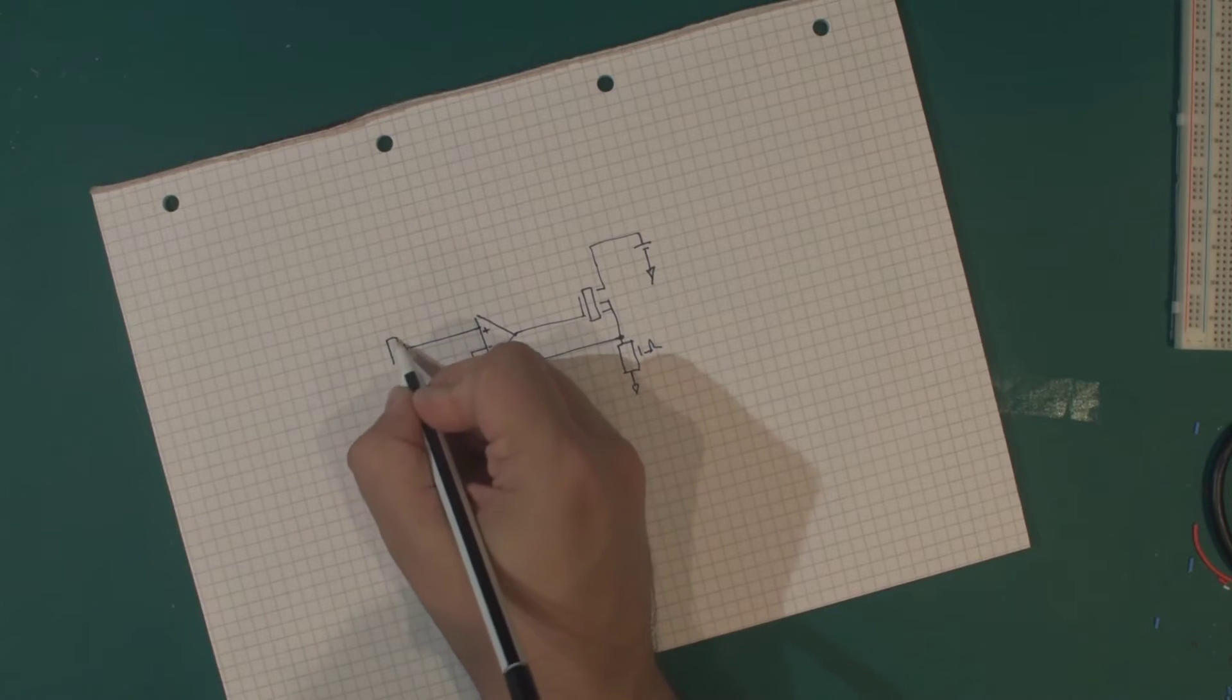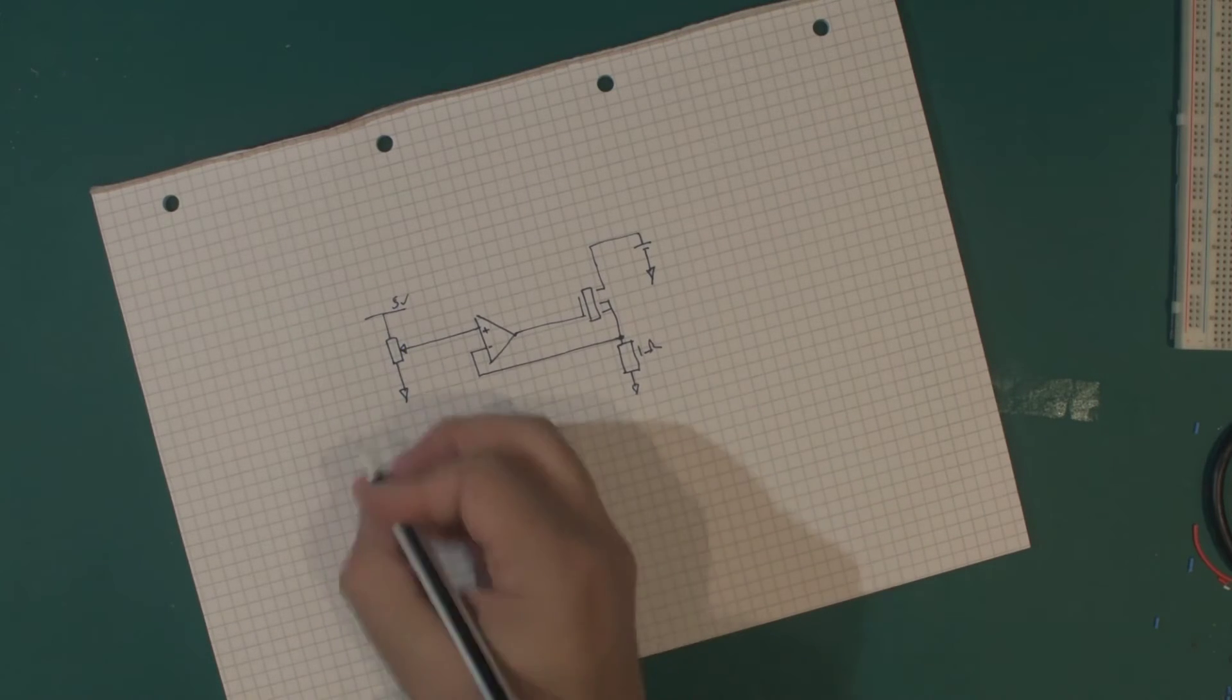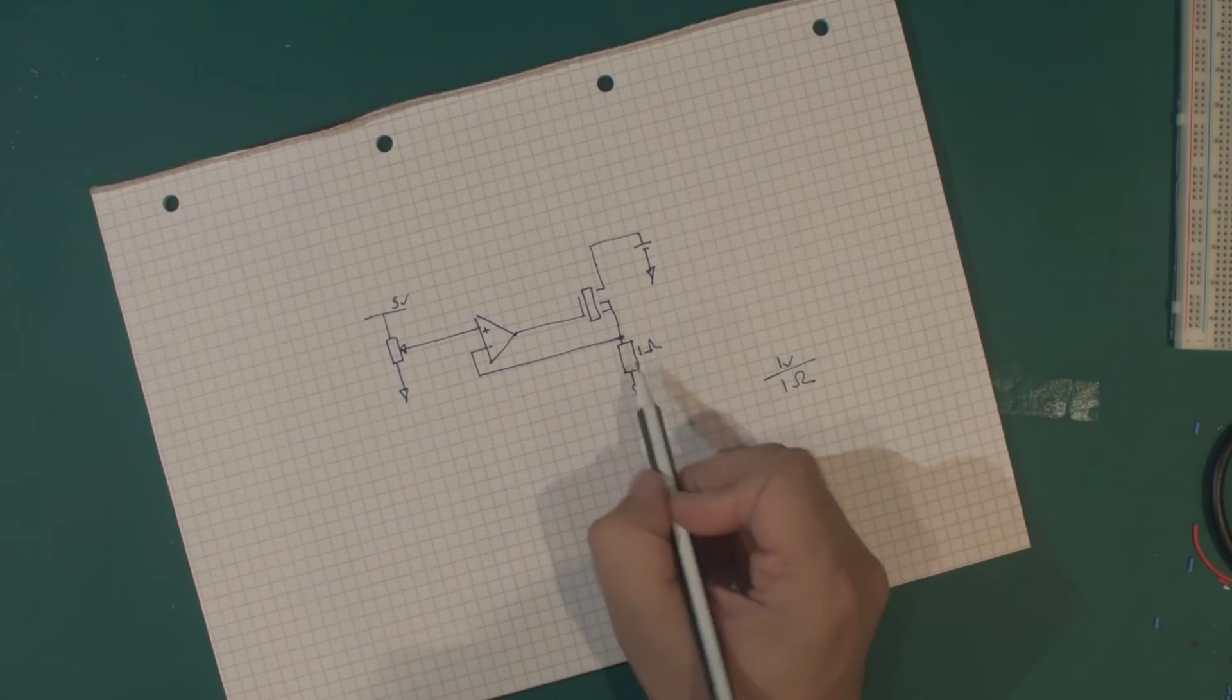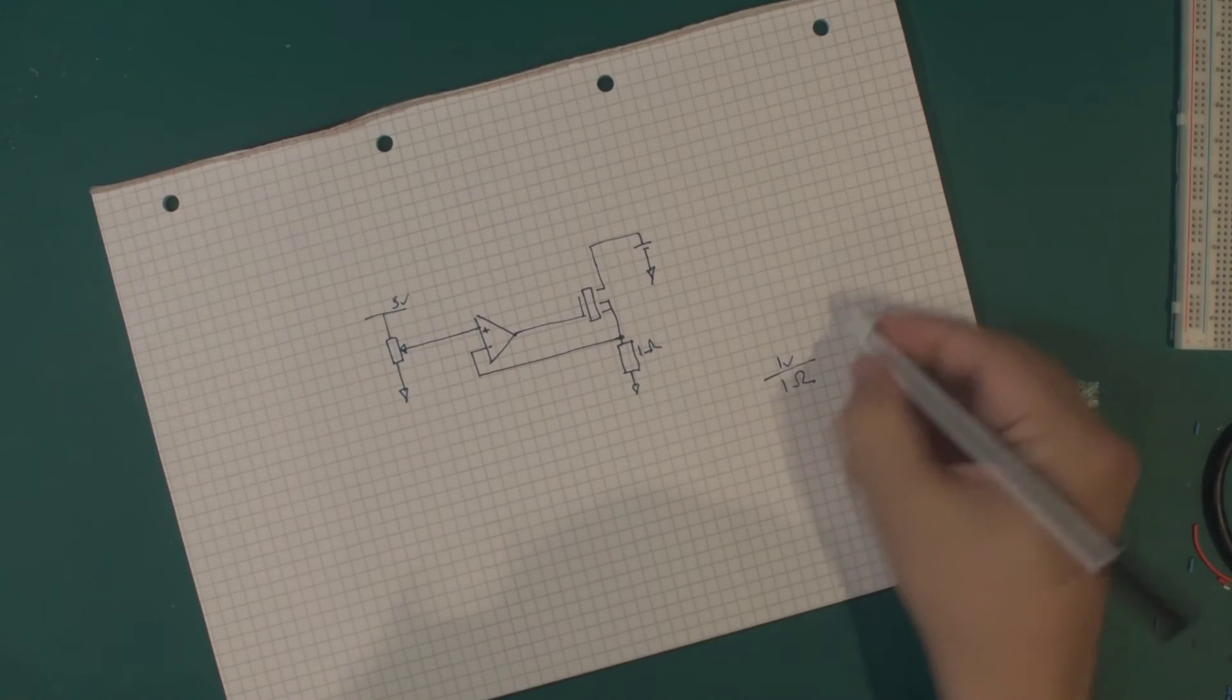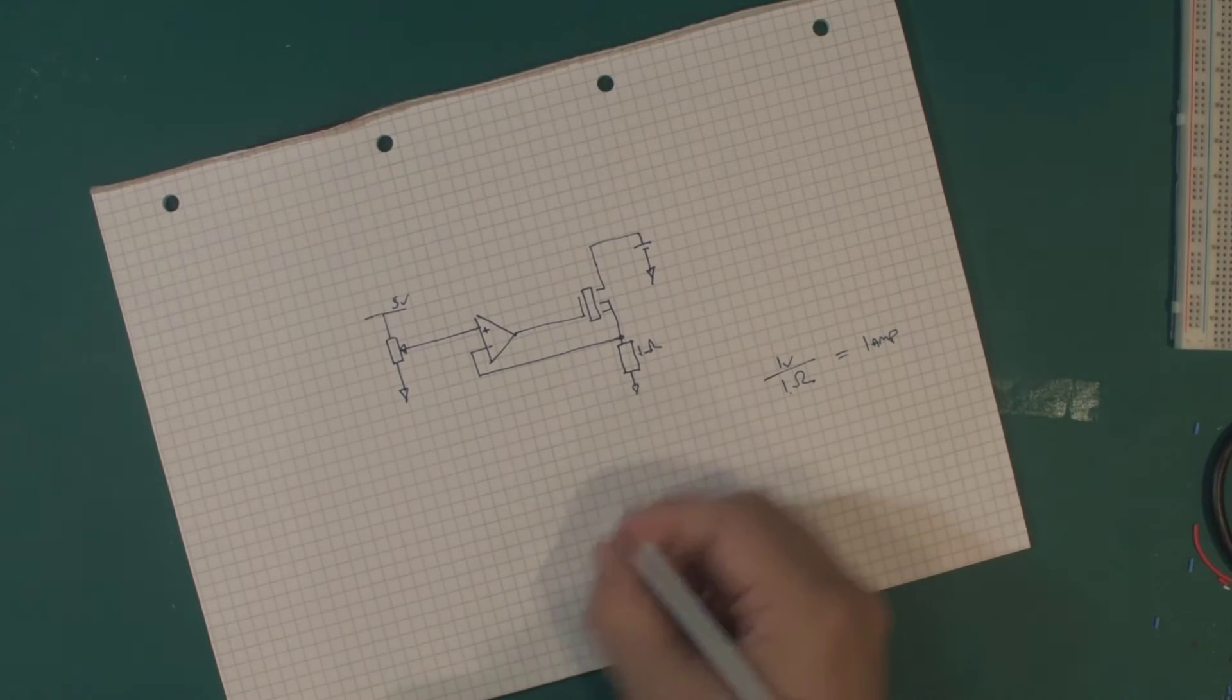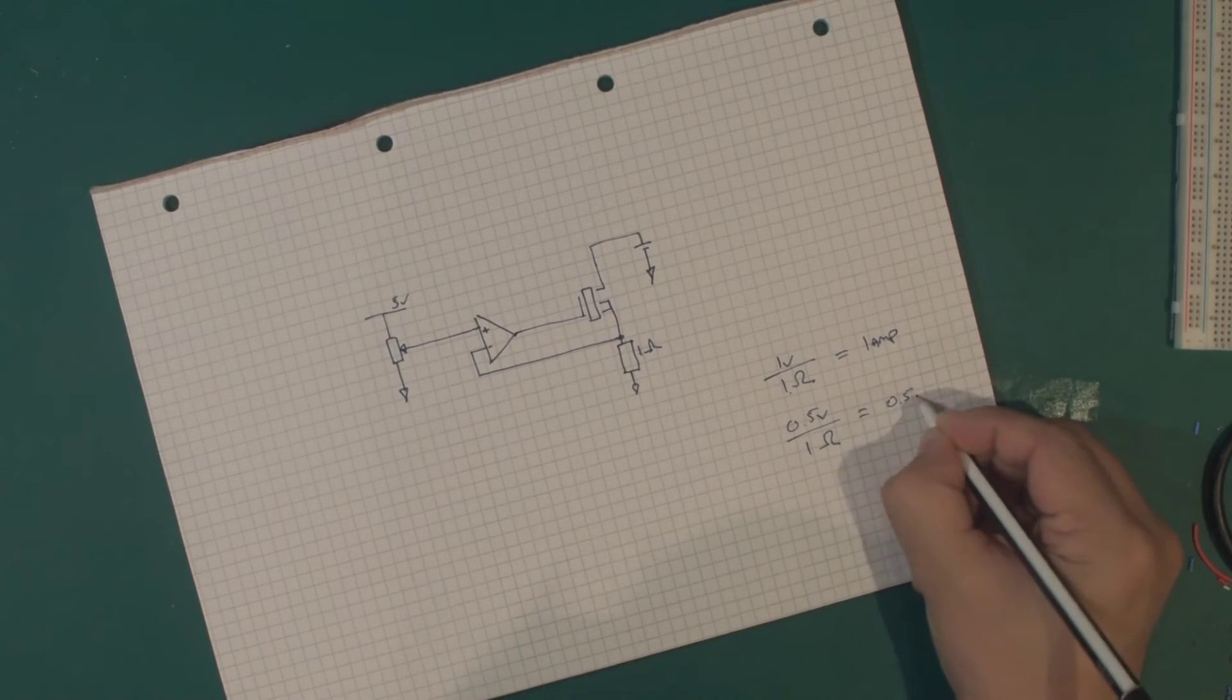So if we trim this to be one volt and we have one ohm, that means the load on our battery should be one volt over one ohm, which should be one amp. If we change this to 0.5 volts over one ohm, we get half an amp.